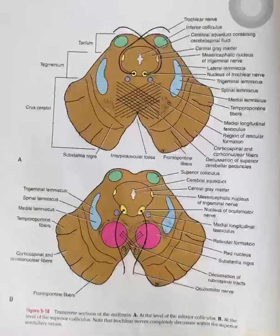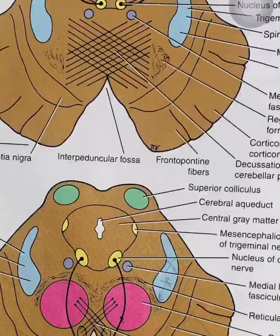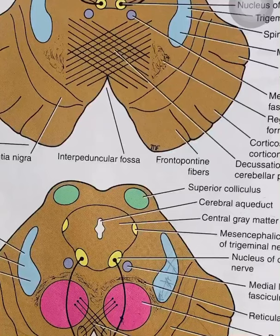This video is about frequently asked questions on the midbrain. There are two parts: one at the level of the superior colliculus and another at the level of the inferior colliculus. Colliculus means there are four — two pairs — called corpora quadrigemina; 'quadri' means four. Superior and inferior colliculus are the two. In the midbrain, cranial nerves three and four are present: three is on top and four is at the bottom.